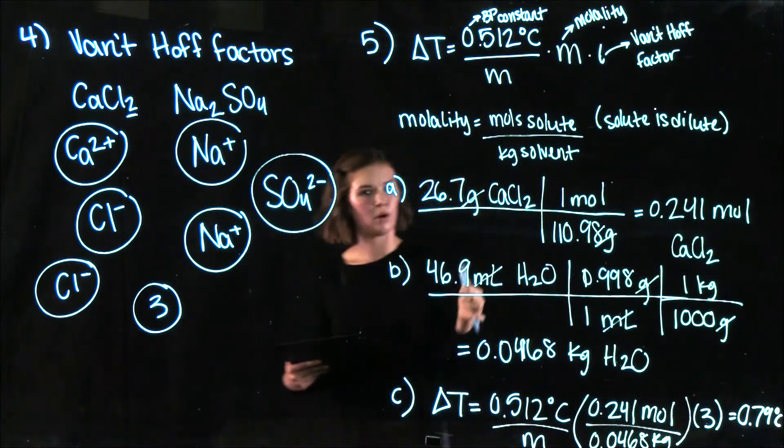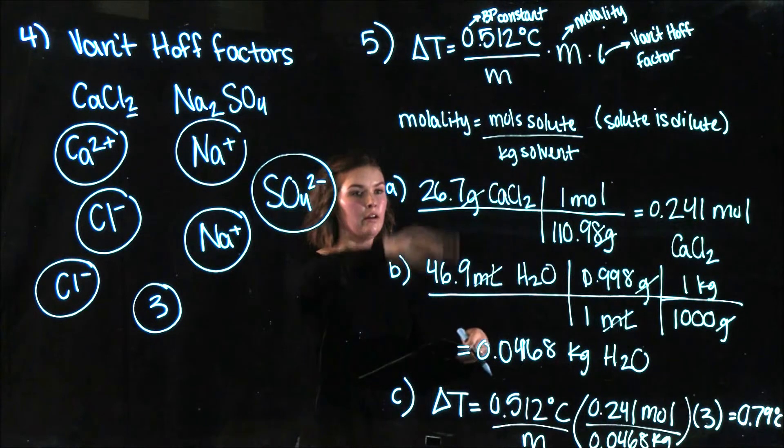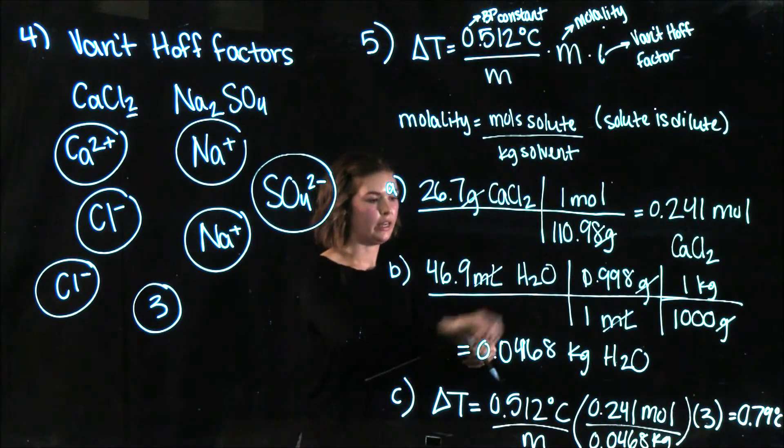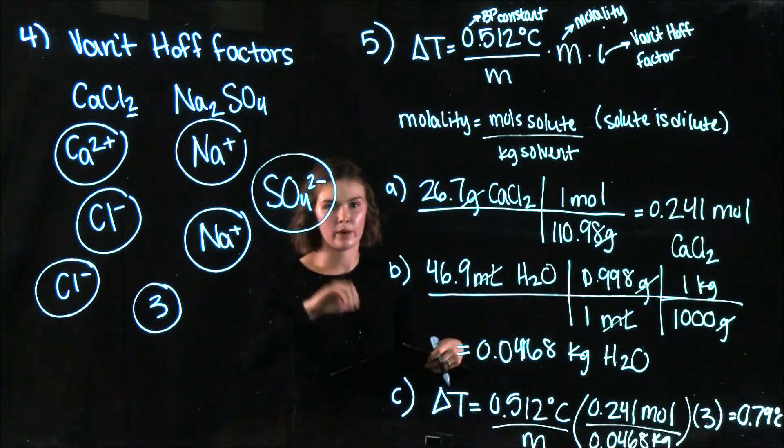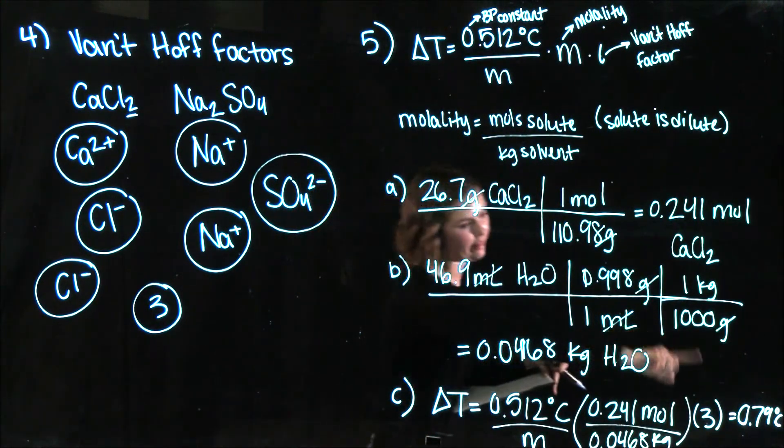So the boiling point of pure water is going to be 100 degrees Celsius. And when you add this amount of calcium chloride to pure water it's going to make the boiling point 100.79 degrees Celsius. So it elevated the boiling point by that much.